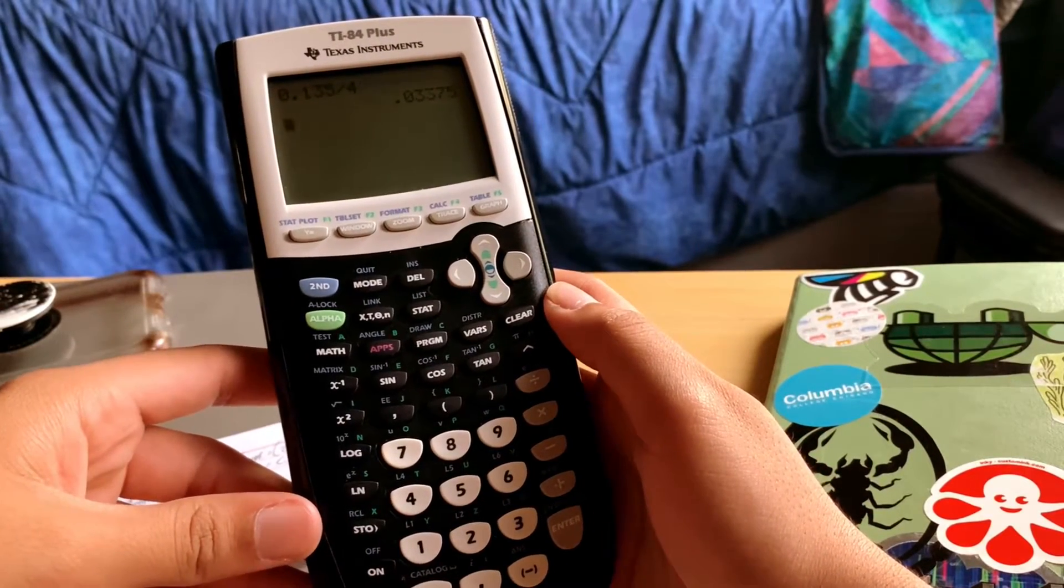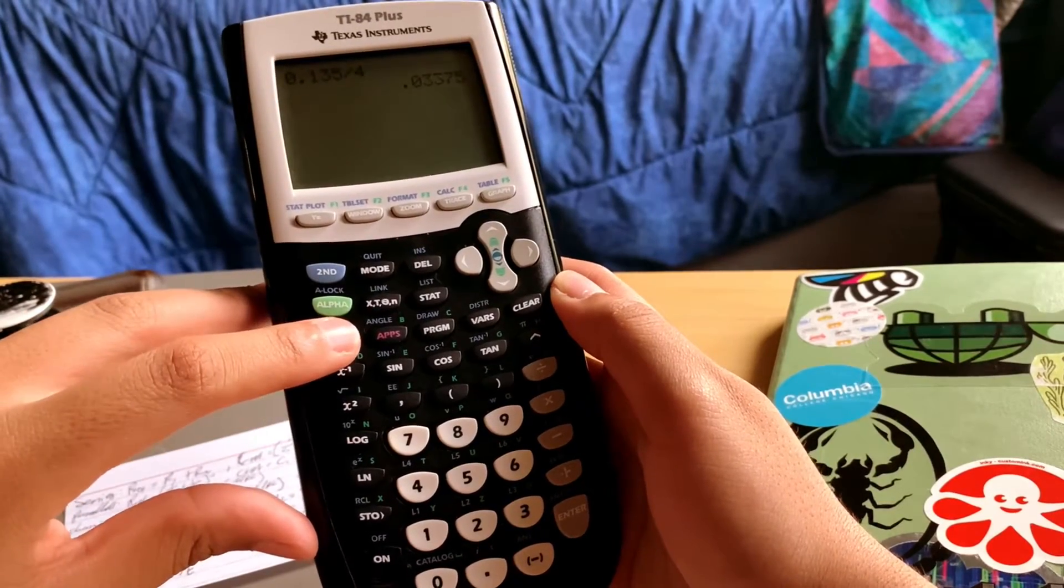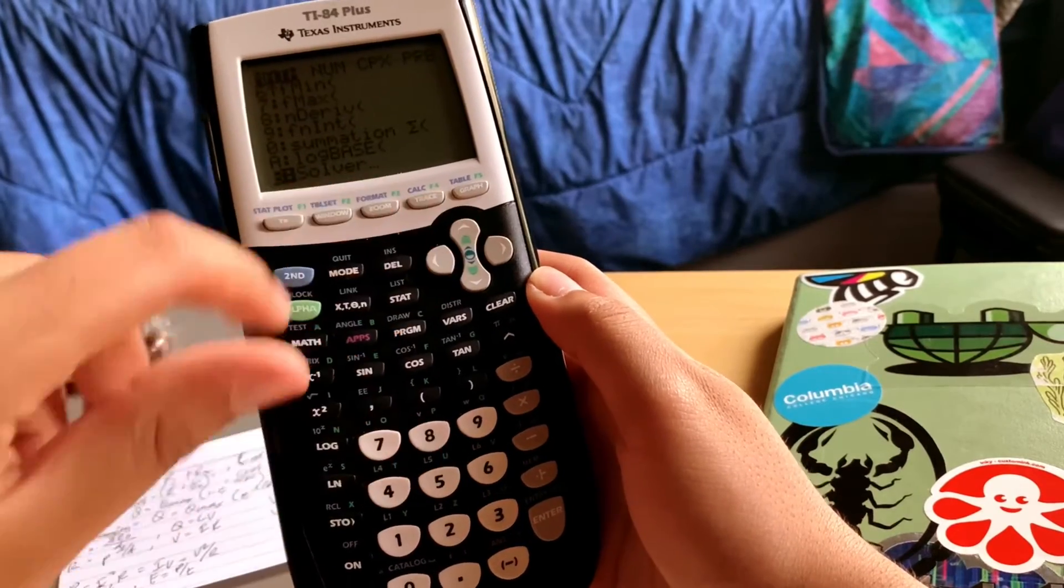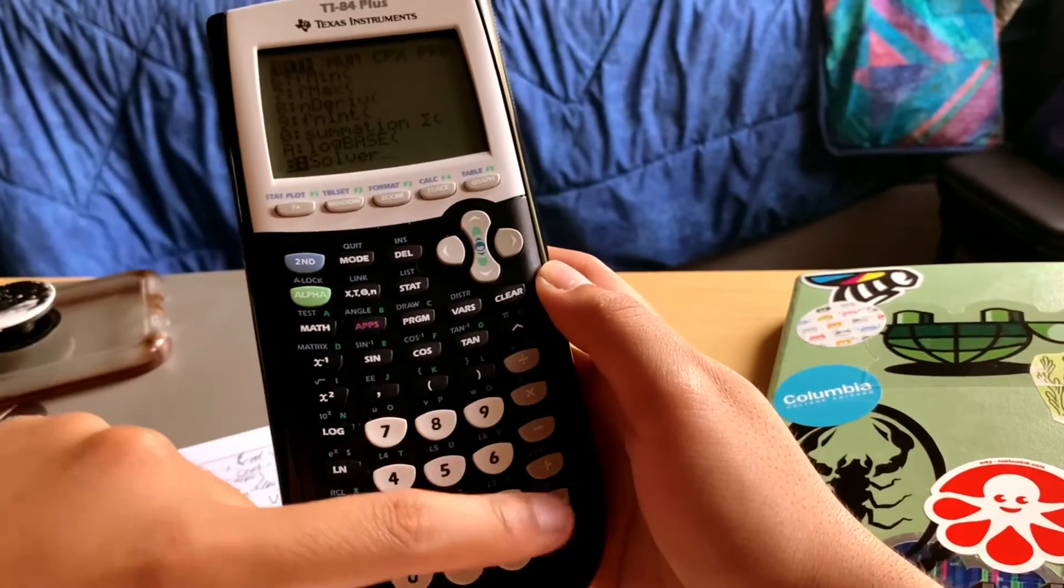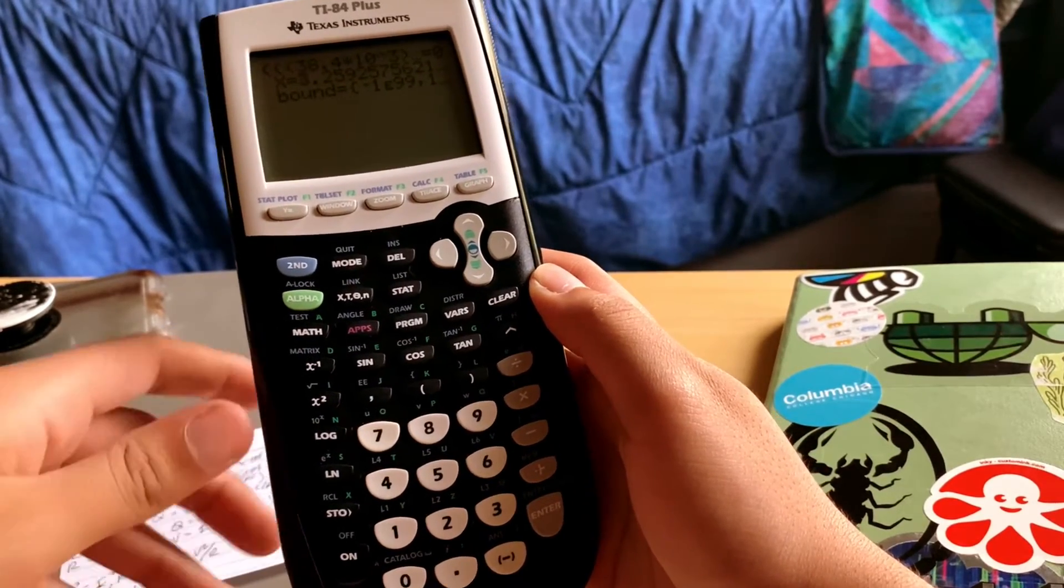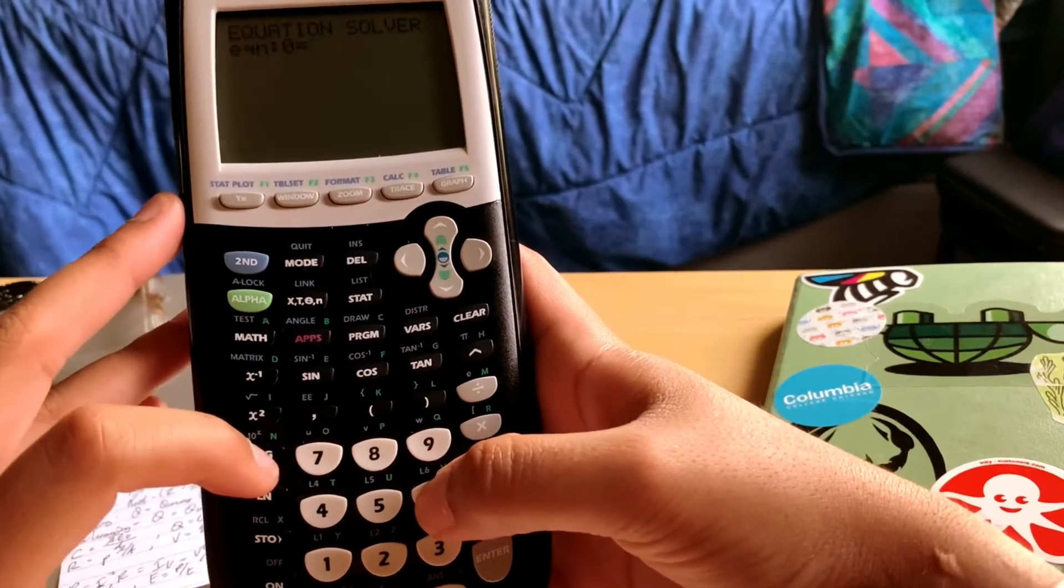Then go to your calculator, press math, scroll down the list to Solver. Enter the manipulated equation into zero equals.